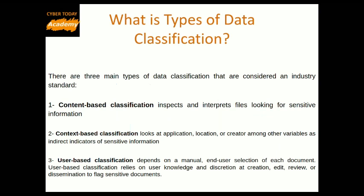What are the types of data classification? There are three main types of data classification that are considered an industry standard: content-based classification, context-based classification, and user-based classification.